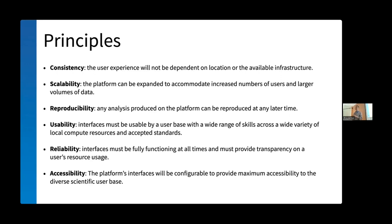There are a bunch of principles identified to drive the design of that SRC science platform — none of them really surprising. But one I want to draw attention to is accessibility. Historically, astronomical software has been bad at this — we build software to solve our particular science problem, and when it spits out numbers we call it done. But making software available to a wide community means accounting for whatever special needs that community has. We need to be conscious of that and build systems that increase the impact of our software by making it accessible to everybody.